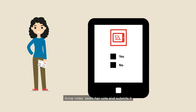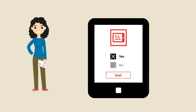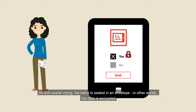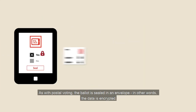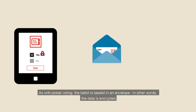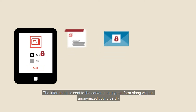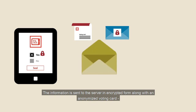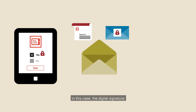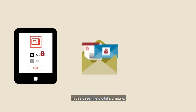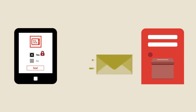Anna votes, seals her vote and submits it. As with postal voting, the ballot is sealed in an envelope. In other words, the data is encrypted. The information is sent to the server in encrypted form, along with an anonymised voting card — in this case, the digital signature.